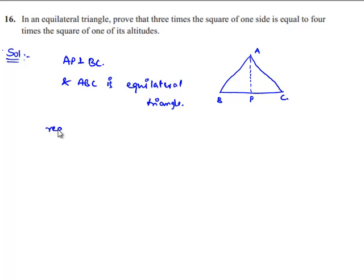We are required to prove that 3 times the square of side, that is, 3 times AB square is equal to 4 times the square of one of its altitudes.